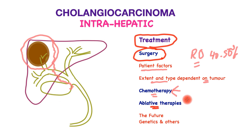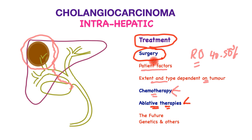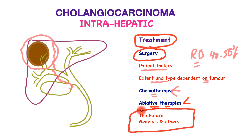Ablative therapies involving microwave, radiofrequency, or radiation are sometimes deployed for patients in which tumors are not amenable to surgery and are localized within the liver. These on their own are not as effective as surgical excision. In the future we look forward to developments in genetics, immunotherapy and other related fields to try and improve outcomes for biliary cancers. This completes this brief video — if you have any comments please do share.